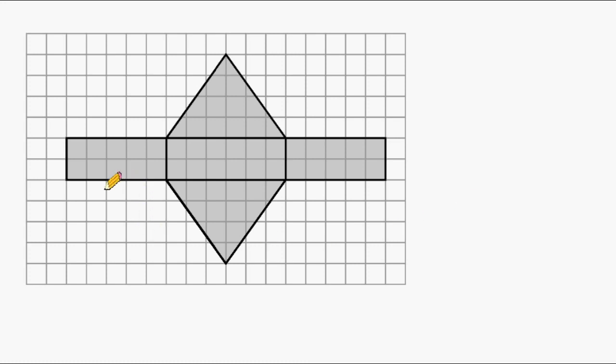This rectangle is a 2 by 5 rectangle which would result in an area of 10. This rectangle is a 2 by 6 rectangle which would give us an area of 12. And this rectangle is a 2 by 5 rectangle which gives us an area of 10.